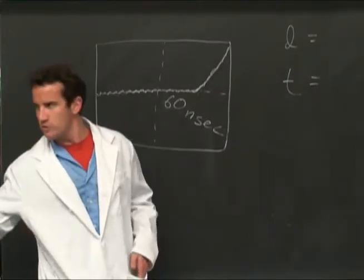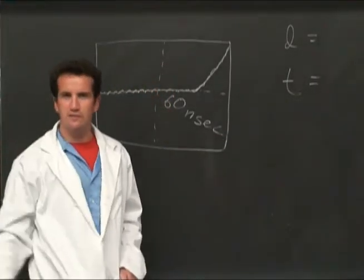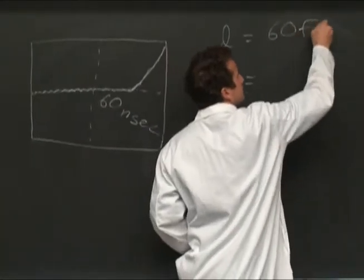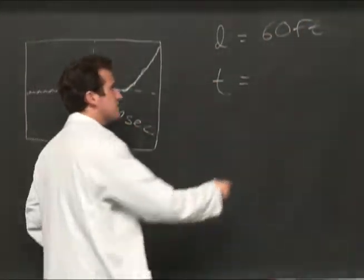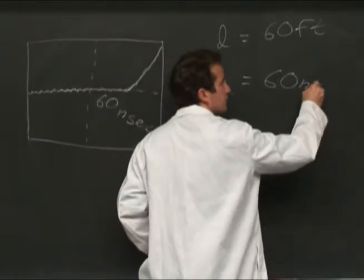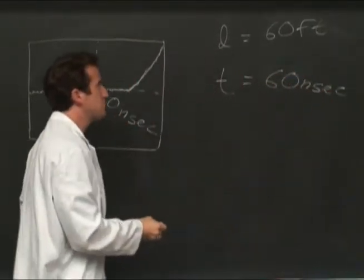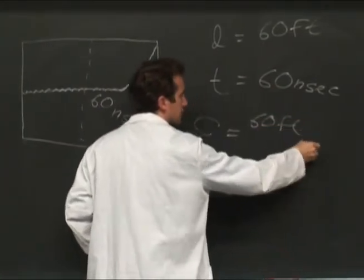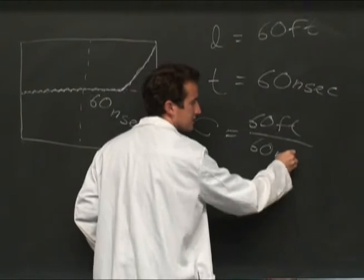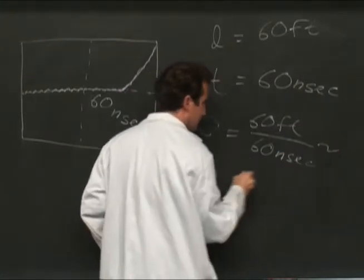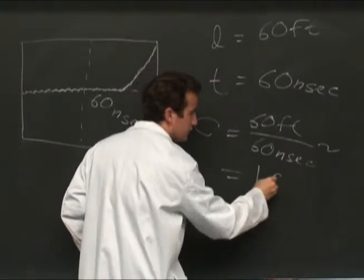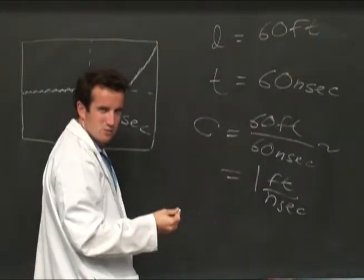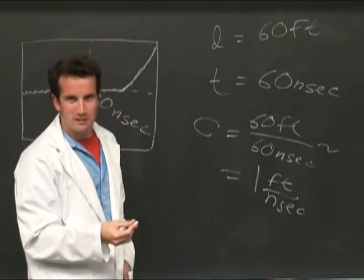But the distance we measured was 30 plus 30 feet—60 feet total. In a time of 60 nanoseconds, that makes the speed of light C equal to 60 feet per 60 nanoseconds, or about one foot per nanosecond. And that amount is what physicists usually refer to the speed of light as.